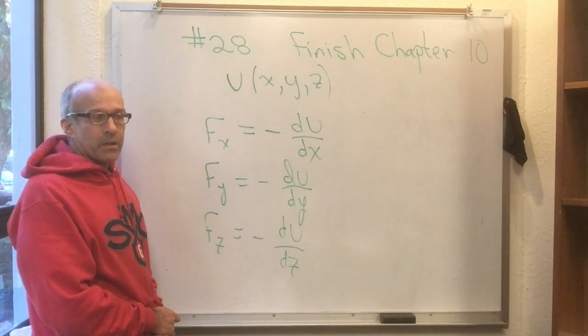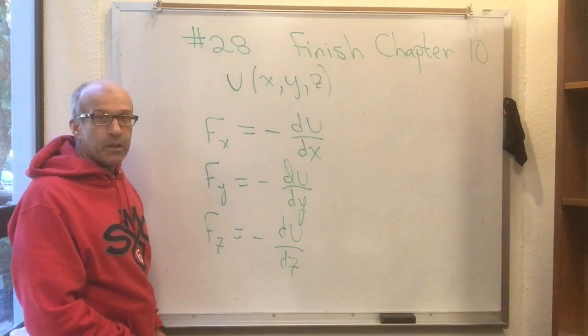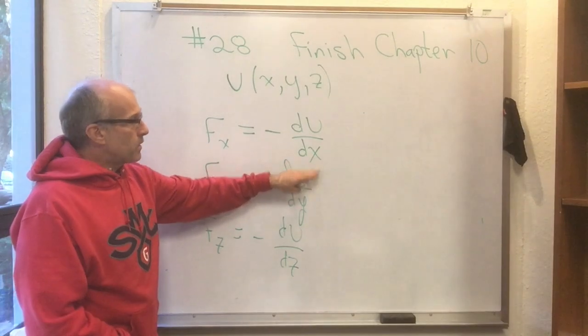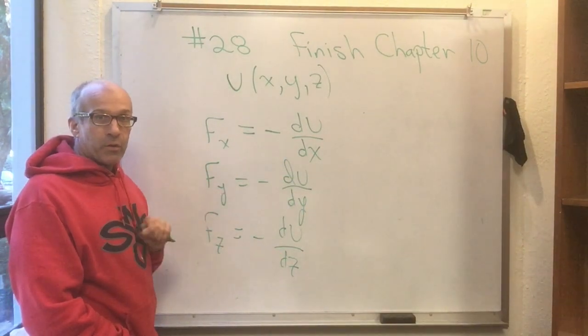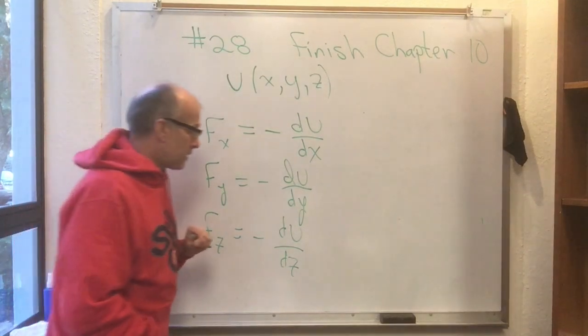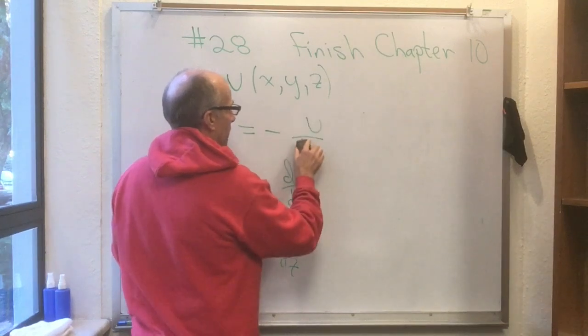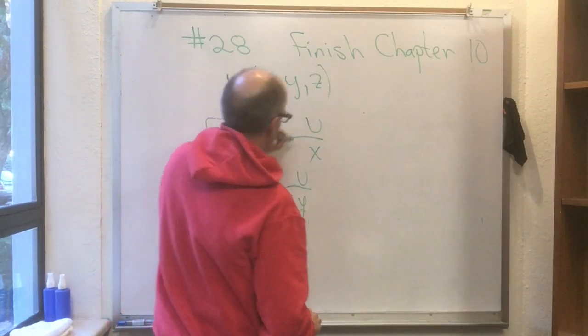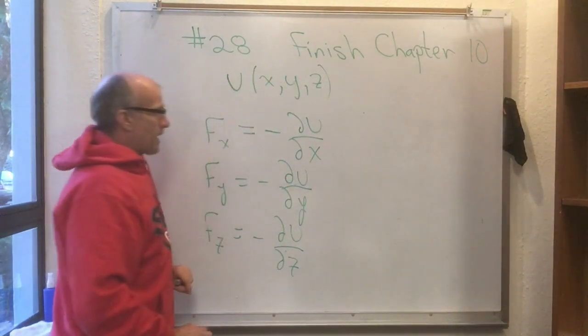Now mathematicians, even though this totally makes sense the way I've written it, when there's multiple variables in a problem x, y, and z, and when you can take the derivative with respect to any of those variables, they actually use a different symbol. They don't use the letter d anymore, they use this funny symbol like that, that's sort of a stylized d.